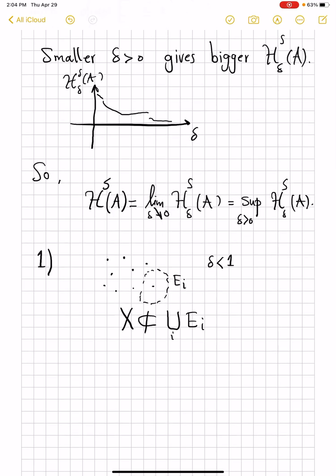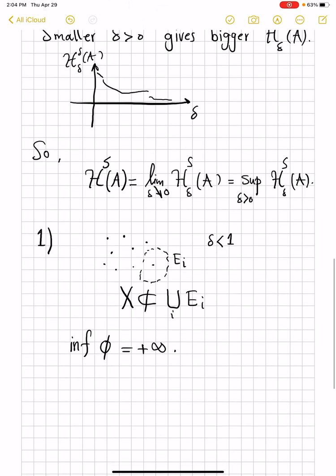We shall prove later, and it's actually an easy exercise, that if your space is separable, then you can always find coverings with diameter less than delta. But anyway, to get out of this trouble, we agree that infimum of empty set is plus infinity. It's strange, but it agrees with the fact that if you cannot cover your set with a countable union, that means it's a huge set. So, it's just reasonable to say that it is of infinite size or measure. And that is one thing.